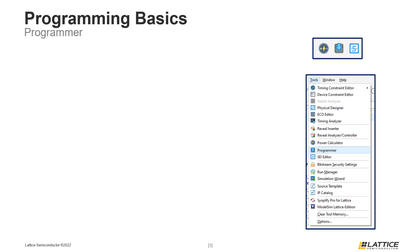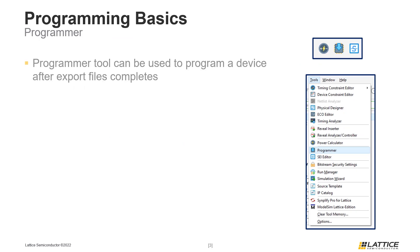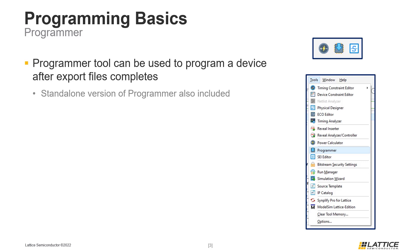Once a programming file has been generated, users can use Radiant's programmer tool to program a device. Radiant's programmer tool is a programming environment for PC and Linux systems that can be used to program a device or a daisy chain of devices. Radiant also comes with a standalone version of the programmer tool that can be used for device programming outside of Radiant. In this chapter, we will be focusing on the programmer tool flow using Radiant and will not discuss the standalone version in depth.